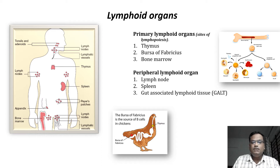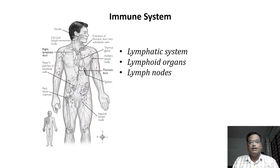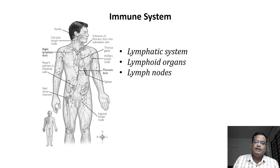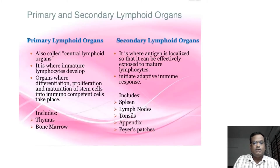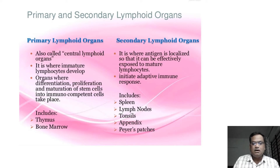These are the primary and peripheral lymphoid organs found in our body. The immune system is represented by the lymphatic system, which includes the lymphoid organs, lymph nodes, and the lymph — the body fluid in which immune system cells circulate. This diagram shows some differences between the primary lymphoid organs and secondary lymphoid organs.